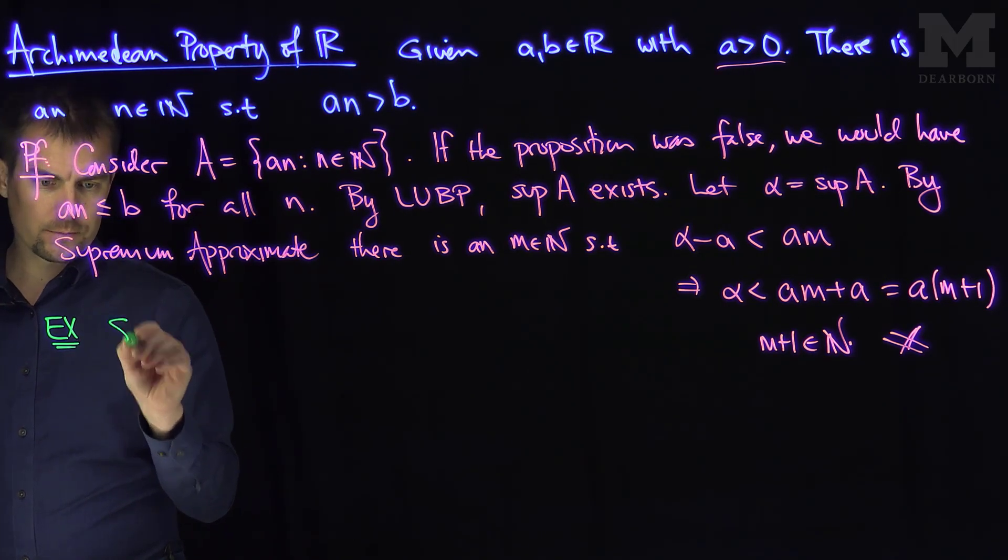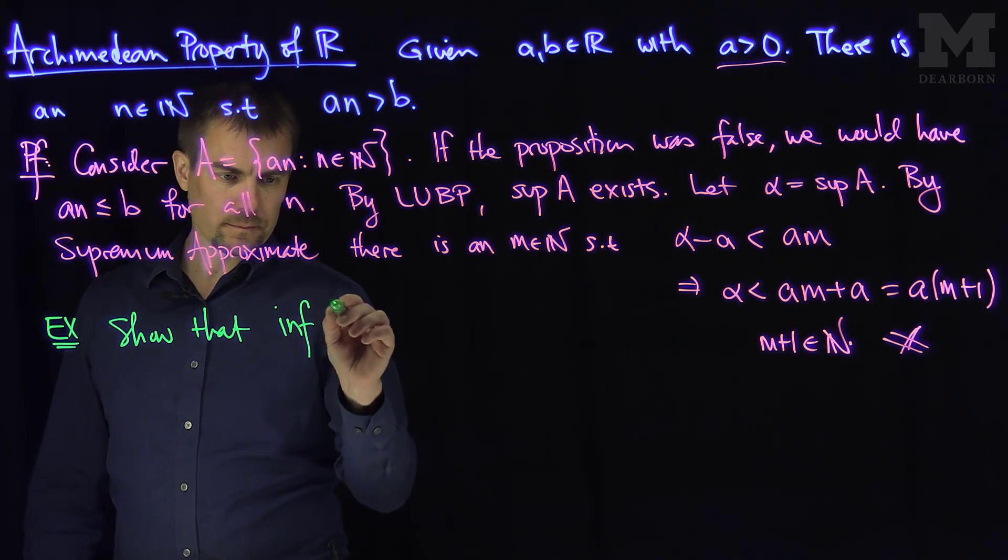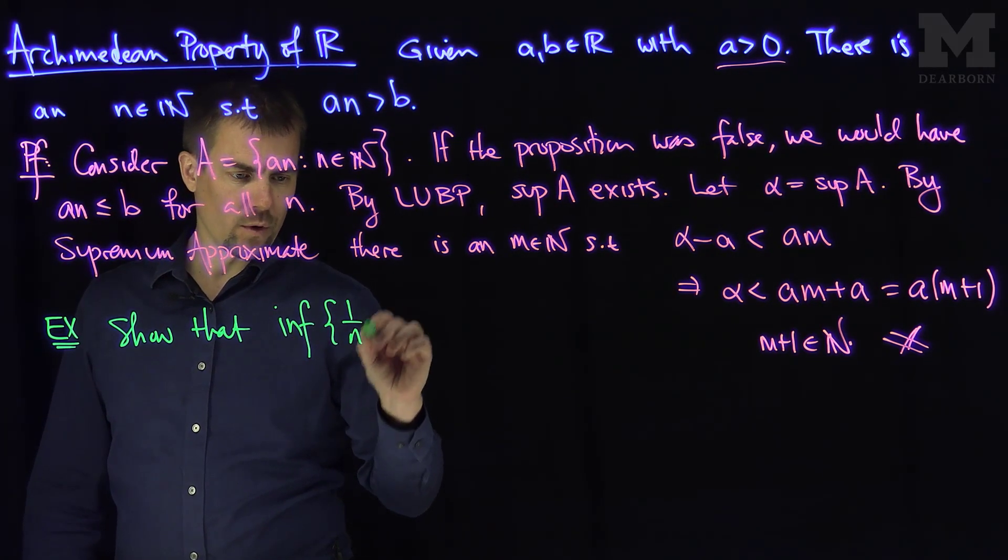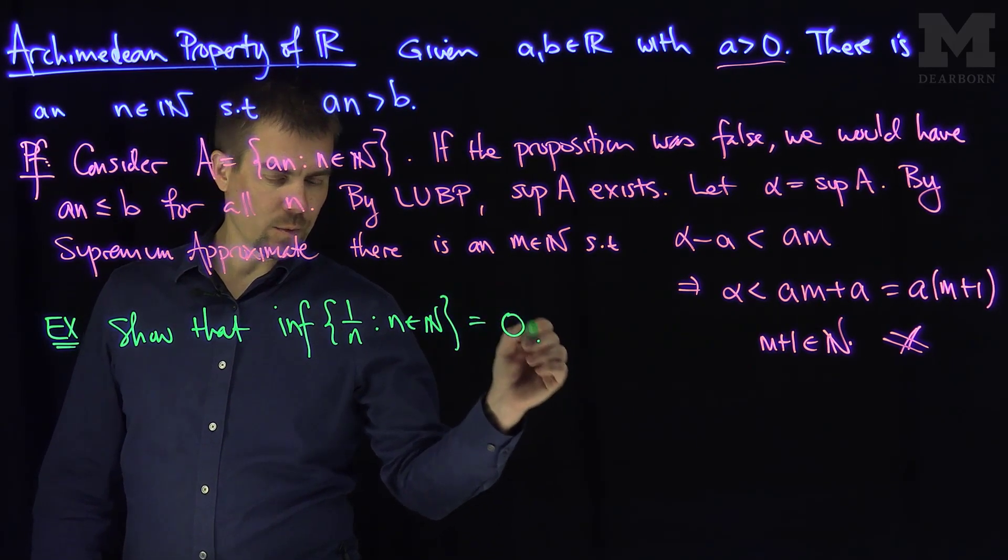an example of applying the Archimedean property. Let's show that the infimum of the set one over n, such that n is in N, is equal to zero.